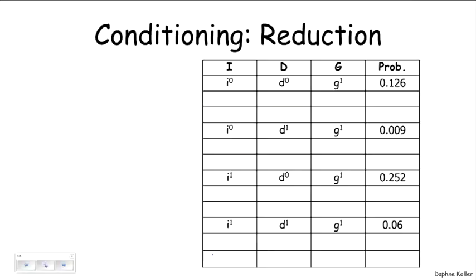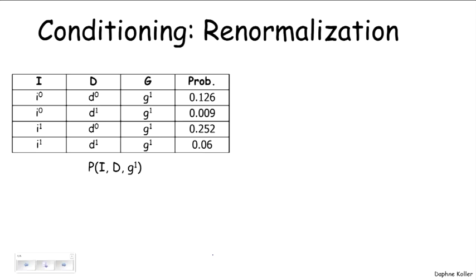Now that by itself doesn't give me a probability distribution. Because notice that these numbers no longer sum to one, because they sum to one before I threw out a bunch of stuff. And so in order to get a probability distribution, what I do is I take this unnormalized measure. The word measure indicates that it's a form of distribution, but the fact that it's unnormalized means that it doesn't sum to one.